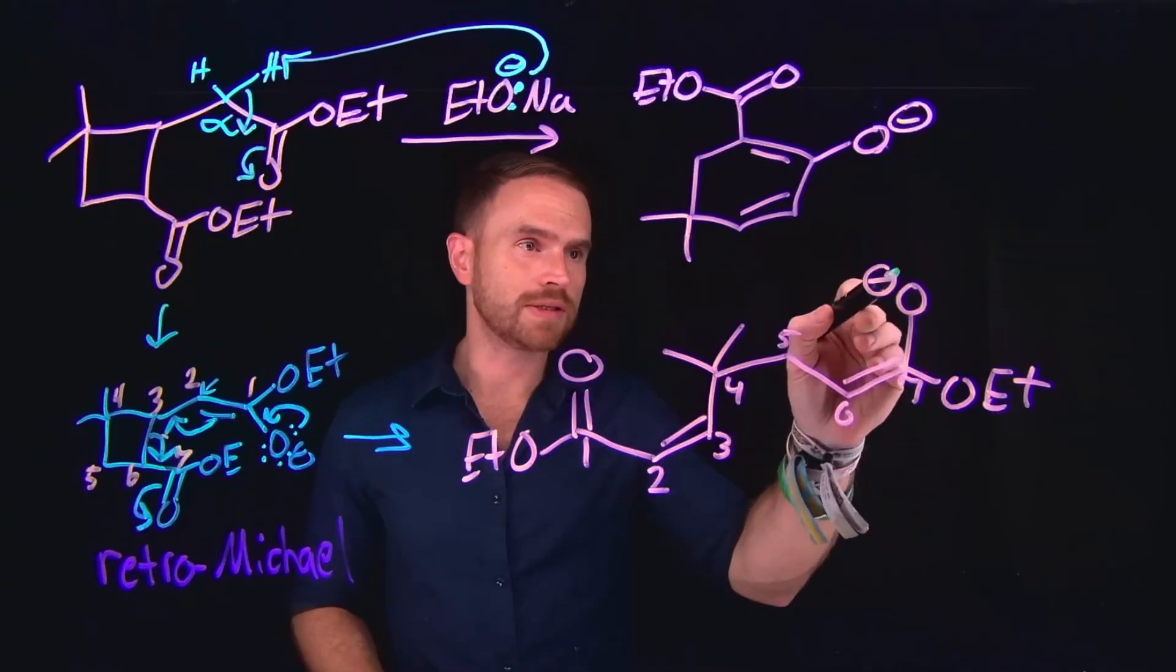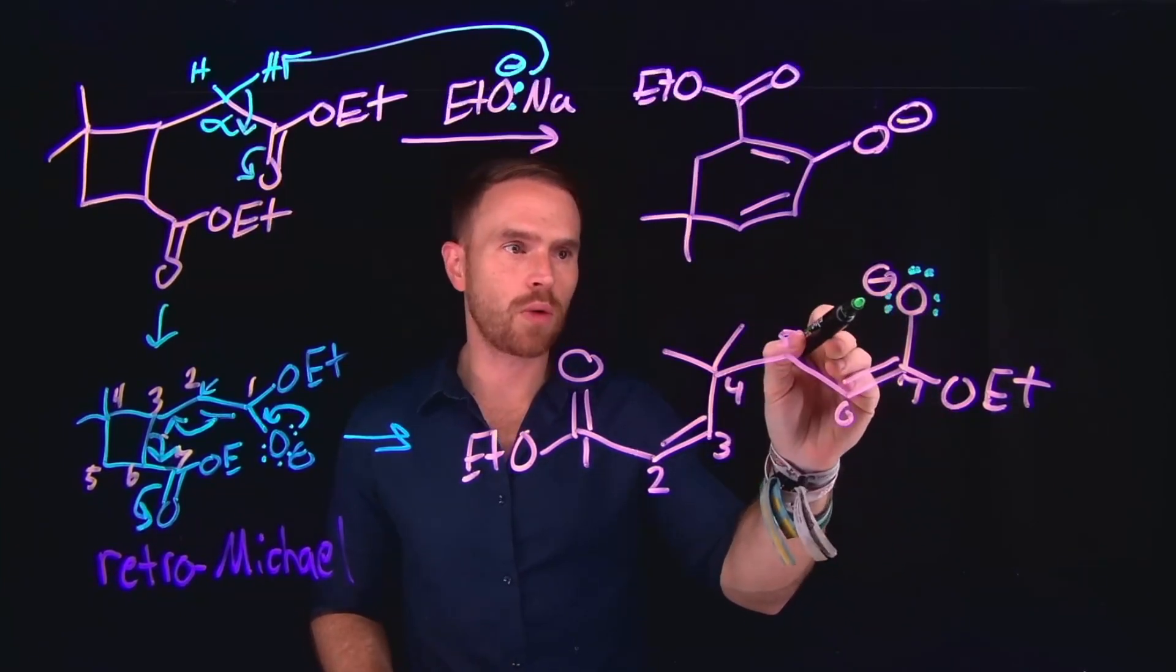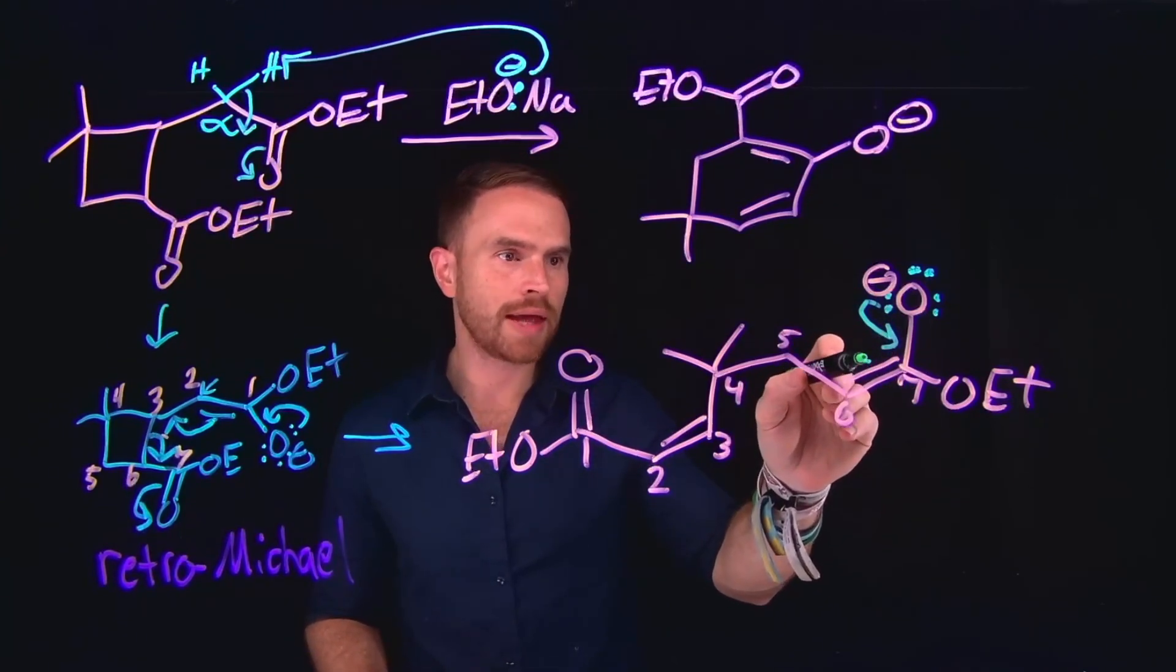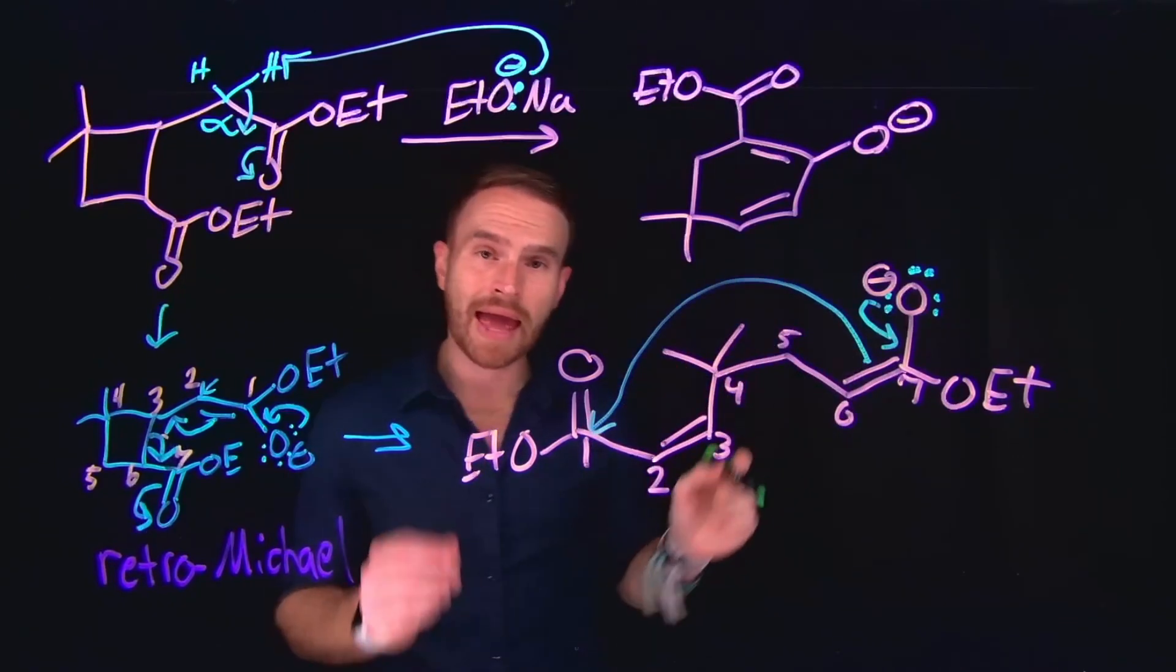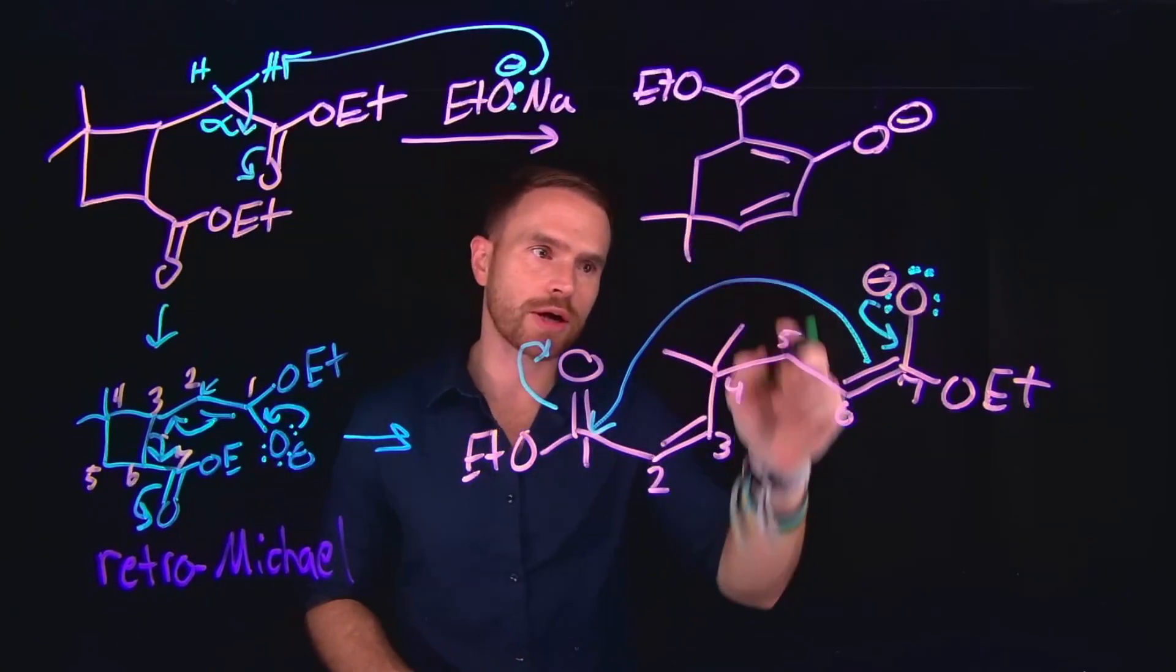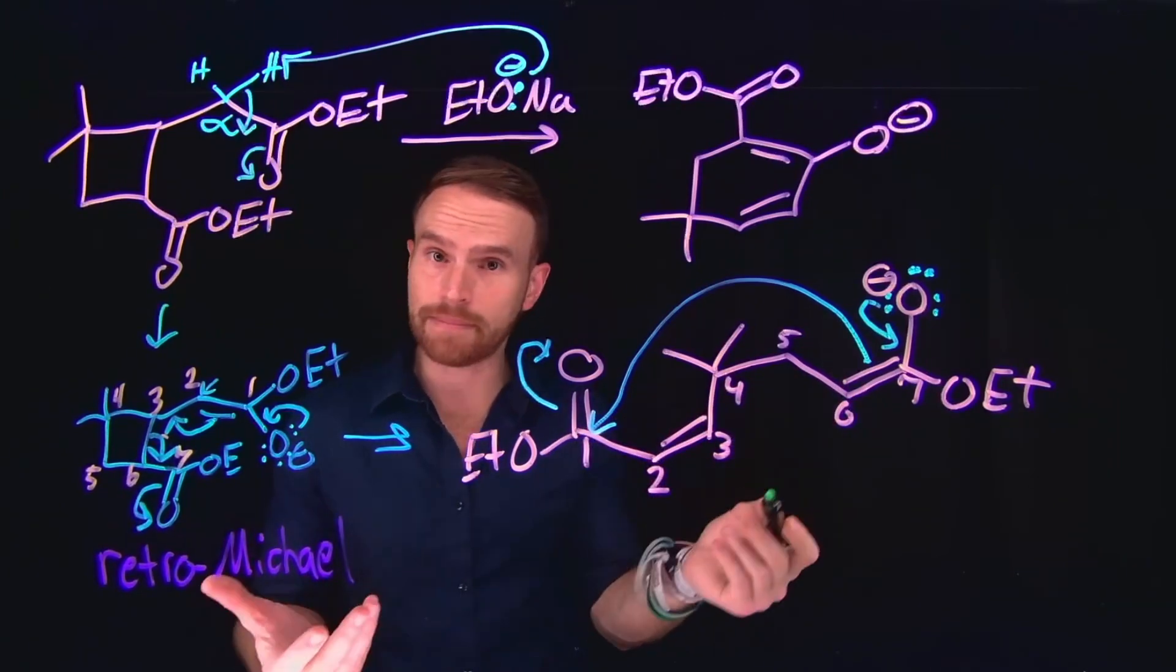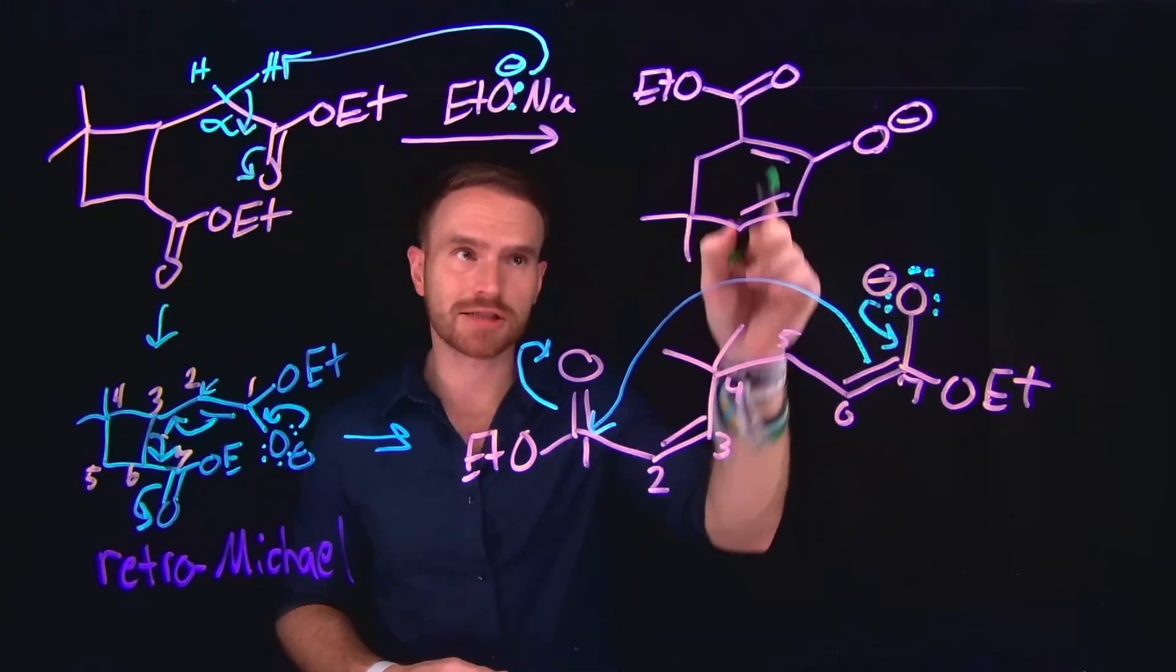And then from here, what happens is actually called another named reaction. And it's called a Diekmann cyclization. So what will happen is these electrons will come back down, reforming our ester. And this position, this bond right here, now will do a nucleophilic attack at this carbonyl carbon. And notice that this is what is going to allow our ring to actually form our six-membered ring. And because we're attaching from this alpha carbon position at position six to position one, and that means that we have six carbons. And so [one, two, three, four, five, six] will form our six-membered ring.